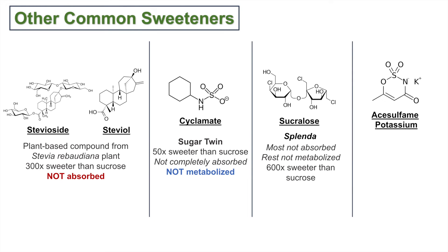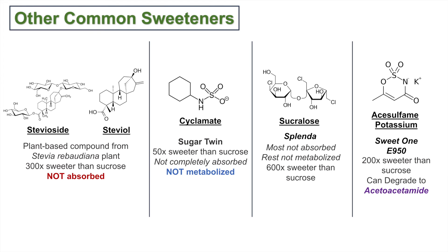Another sweetener seen in different parts of the world is acesulfame potassium, also known as Sweet One or E950. It is about 200 times sweeter than sucrose, and it can be metabolized and degraded to acetoacetamide.